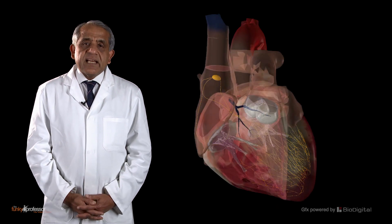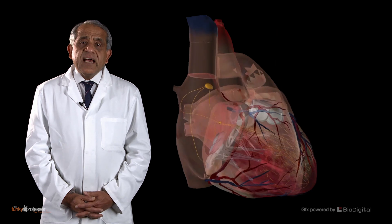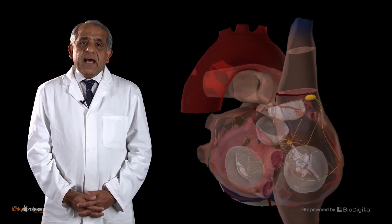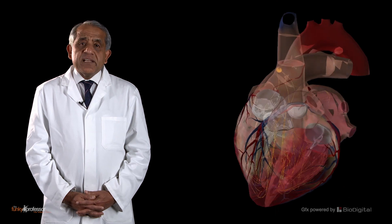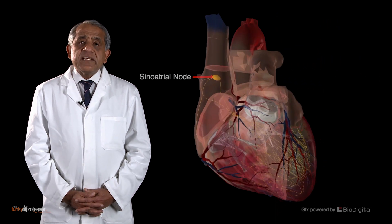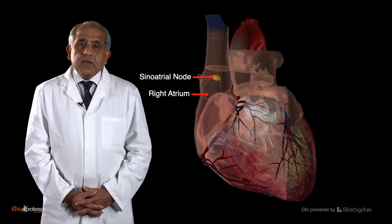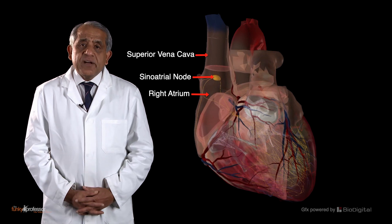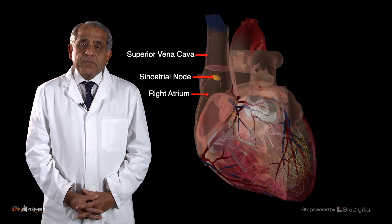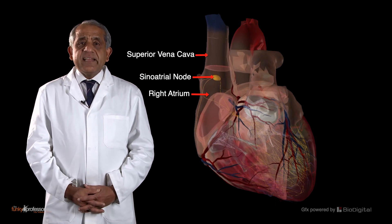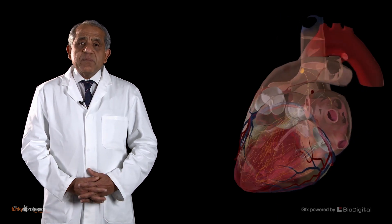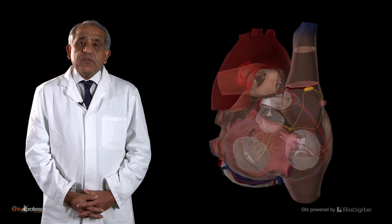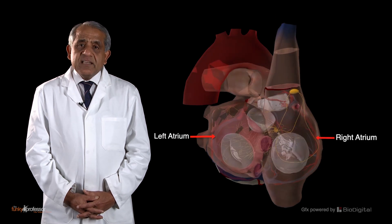The cardiac cycle begins with the cardiac pacemaker, and the pacemaker of the heart is the sinoatrial node, which is situated in the wall of the right atrium where the superior vena cava joins the right atrium. This is where the cardiac impulse begins, and this impulse is immediately transmitted to the right and left atria, which contract in response.